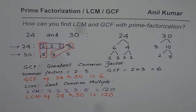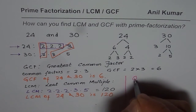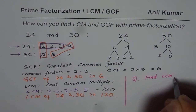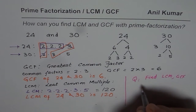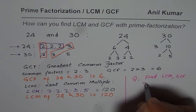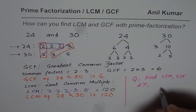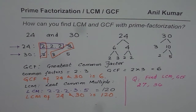As an exercise, you can find LCM and greatest common factor for the numbers 27 and 36 using the prime factorization method you have just learned. I hope that helps. Thank you and all the best.